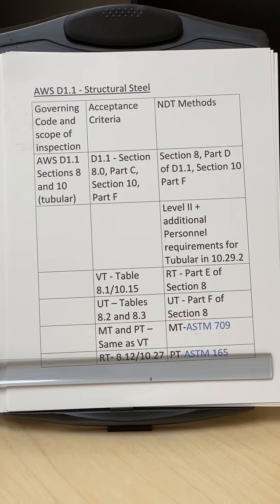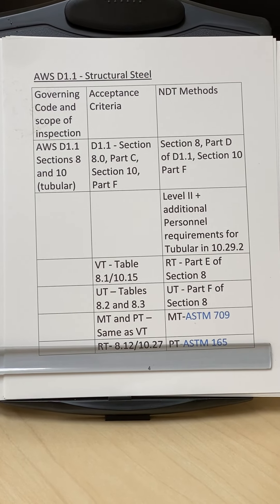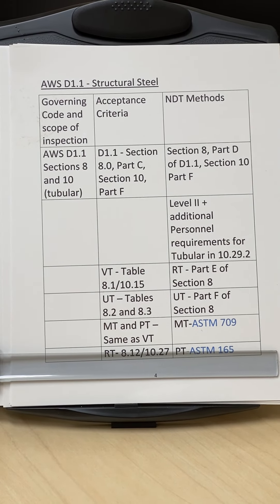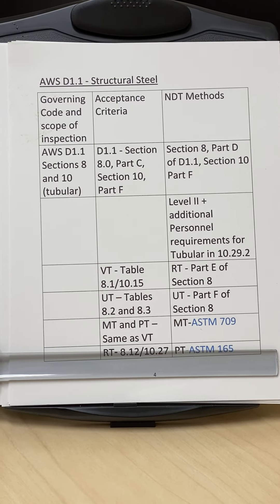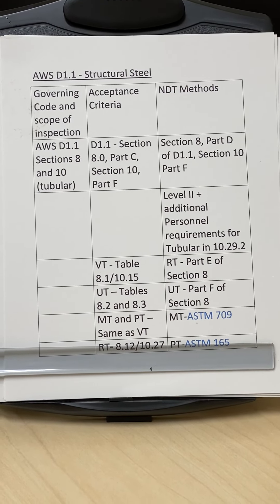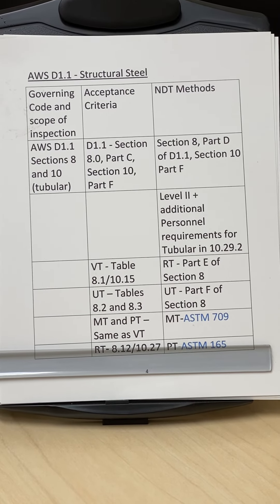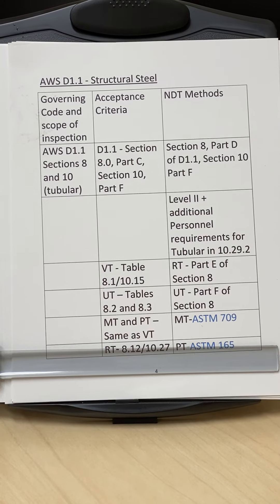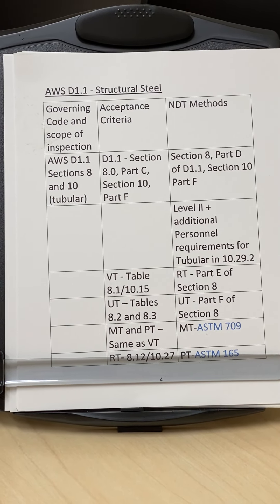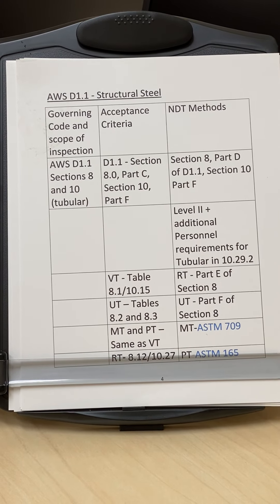Codes will first provide you with the scope of inspection. For example, if radiography has to be done on welded structures, they will specify if all welds have to be inspected, or 10%, or only spot radiography. This is based on stress levels — higher stress requires more inspection. The code will also provide relevant NDT methods, such as ultrasonic testing and radiography in D1.1, and the calibration methodology, for example whether to use notches or side-drilled holes and what size to set up sensitivity.